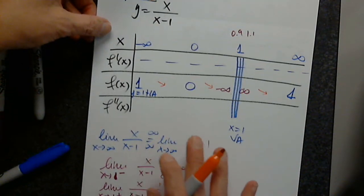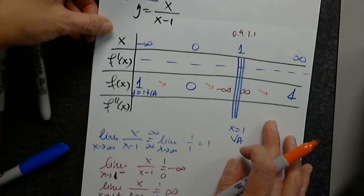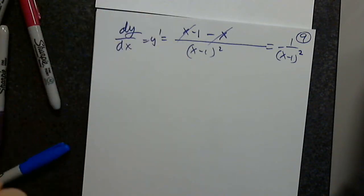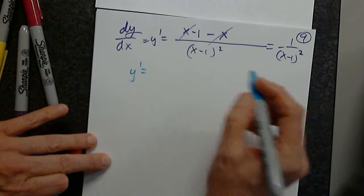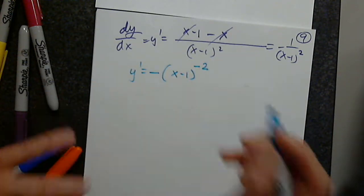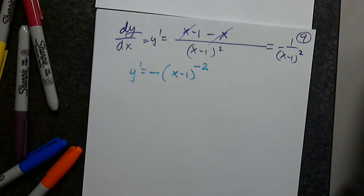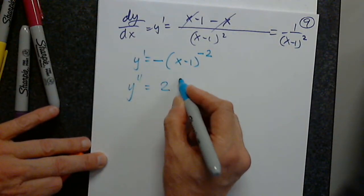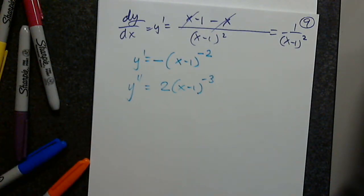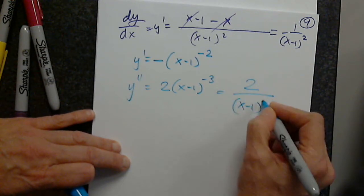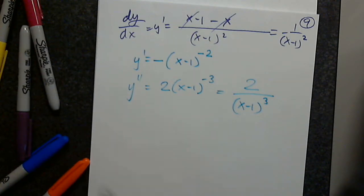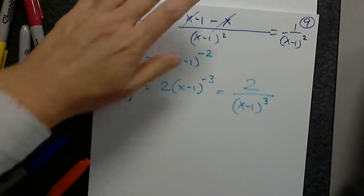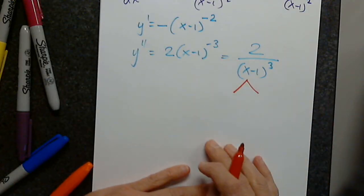It's very clear that for this particular function I could skip the second derivative, but let's not. The first derivative is negative 1 times x minus 1 to the negative 2. Every time when the numerator is a constant, I will always change it into a product, because otherwise I will have to say the derivative of the constant is 0 times this. So the second derivative will be 2 times x minus 1 to negative 3 times the inner function prime.